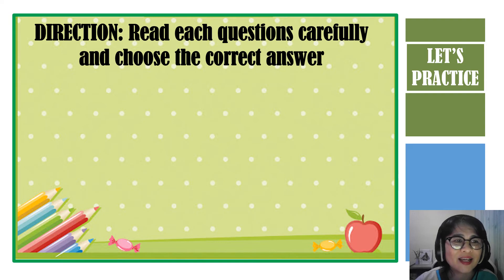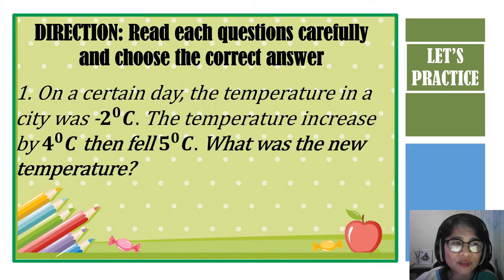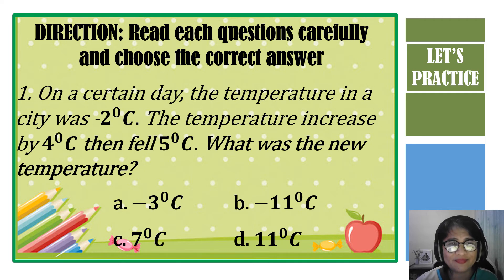Question number 1. On a certain day, the temperature in the city was negative 2 degrees centigrade. The temperature increased by 4 degrees centigrade, then fell 5 degrees centigrade. What was the new temperature? Is it A, negative 3 degrees centigrade? Is it B, negative 11 degrees centigrade? Is it letter C, 7 degrees centigrade? Or letter D, 11 degrees centigrade? And what is the correct answer? The correct answer is negative 3 degrees centigrade.